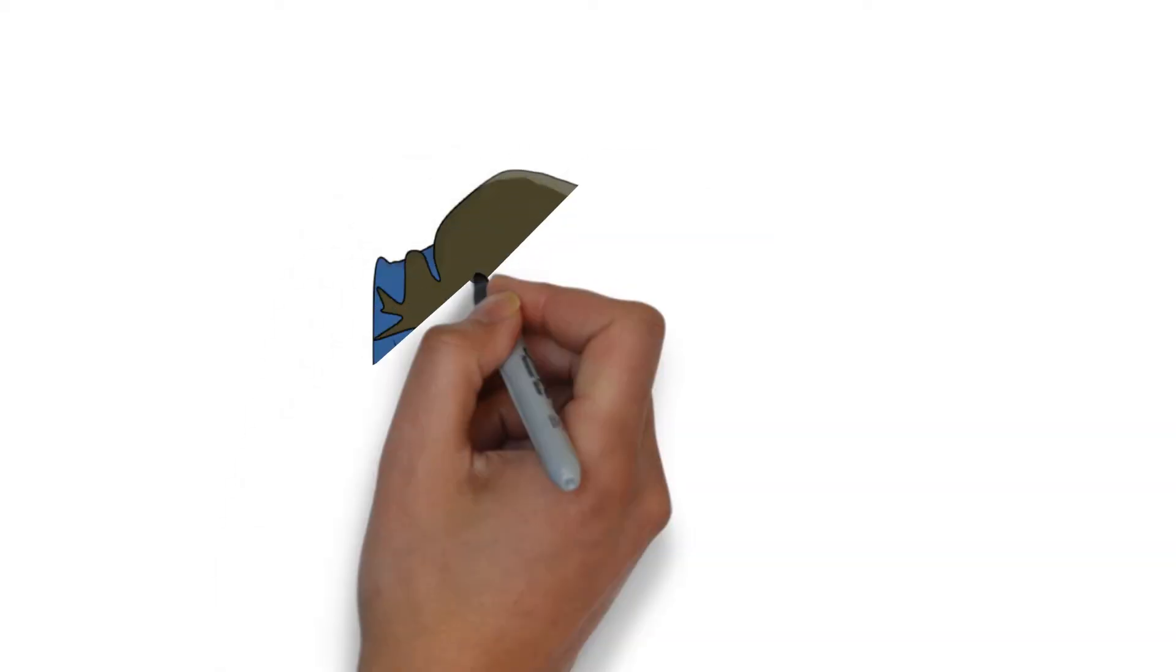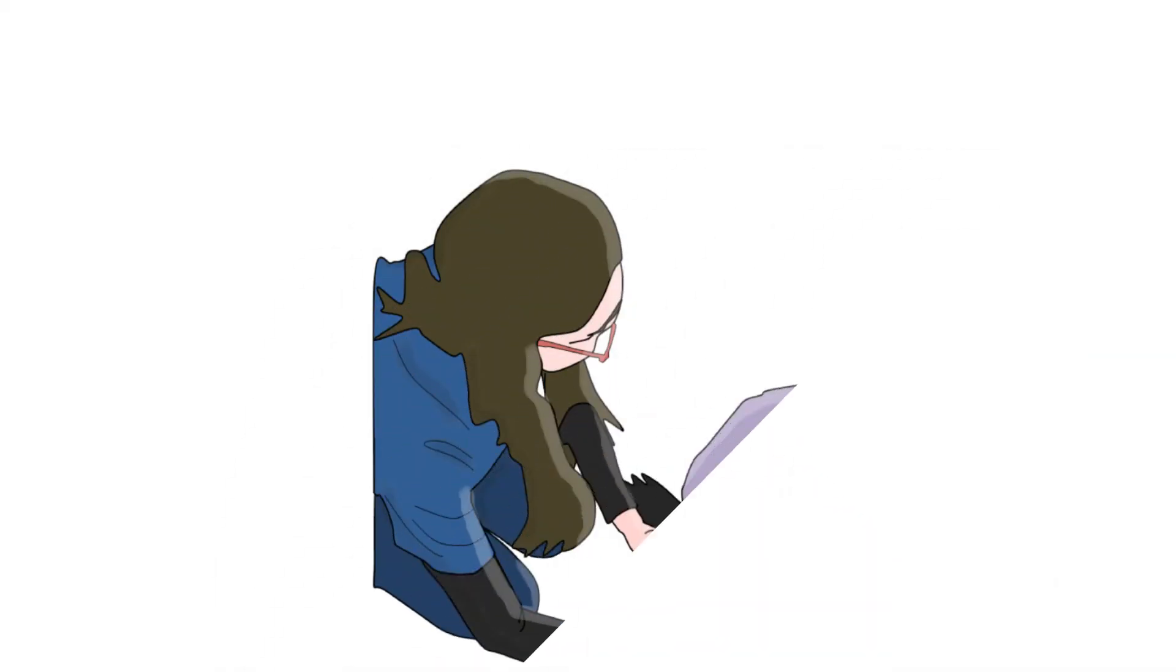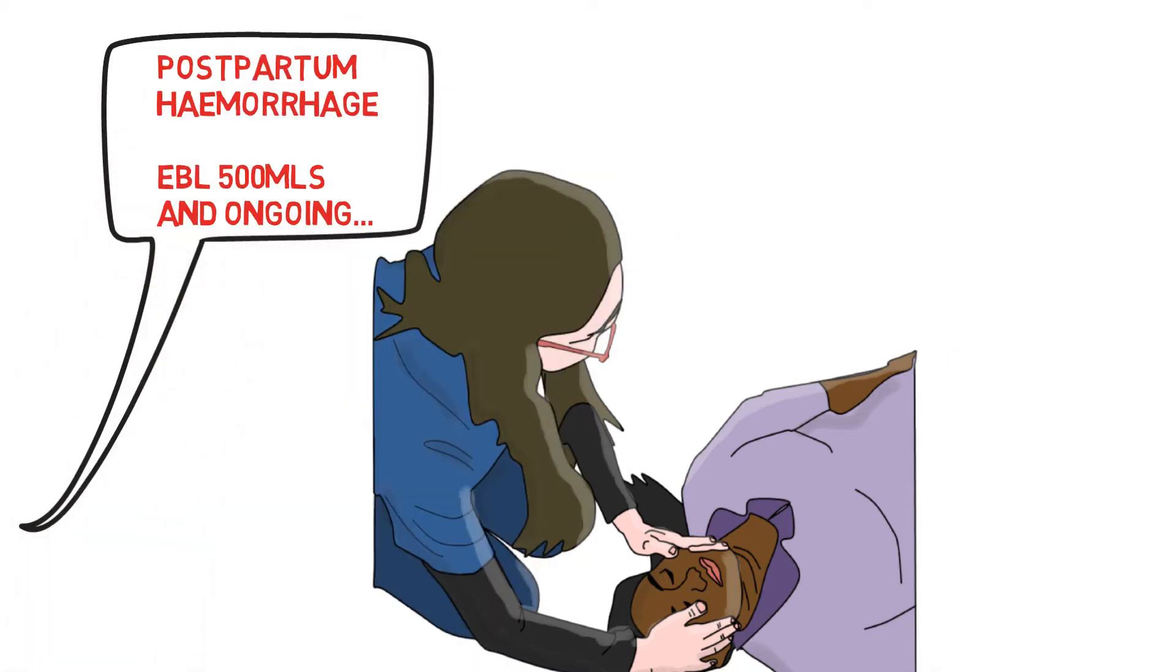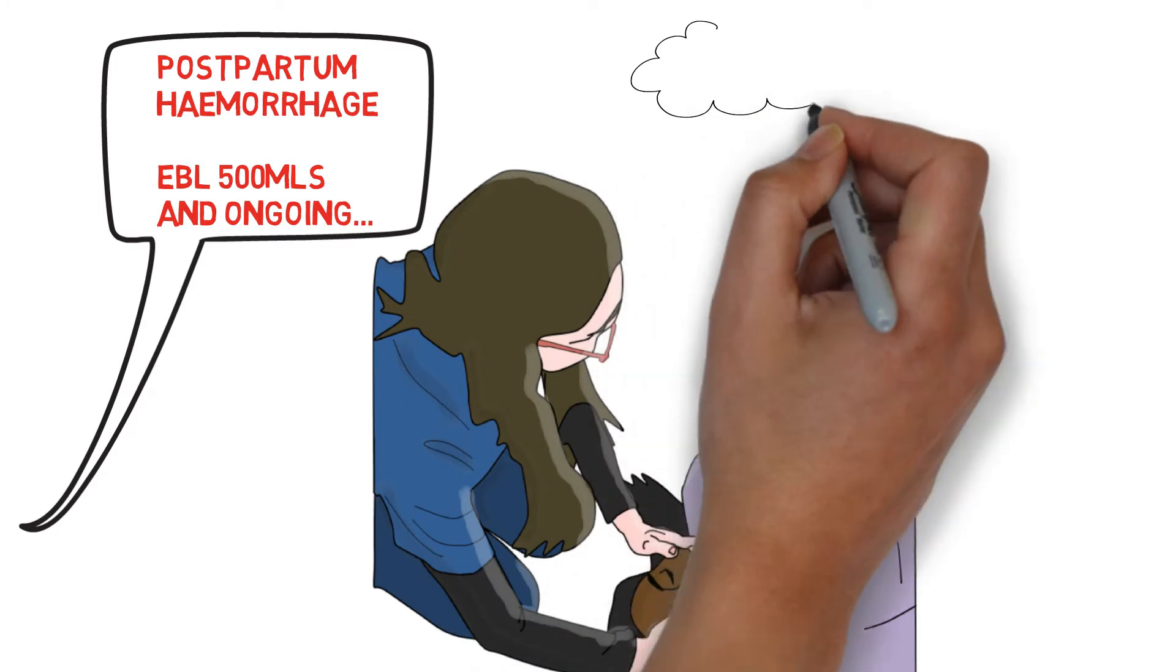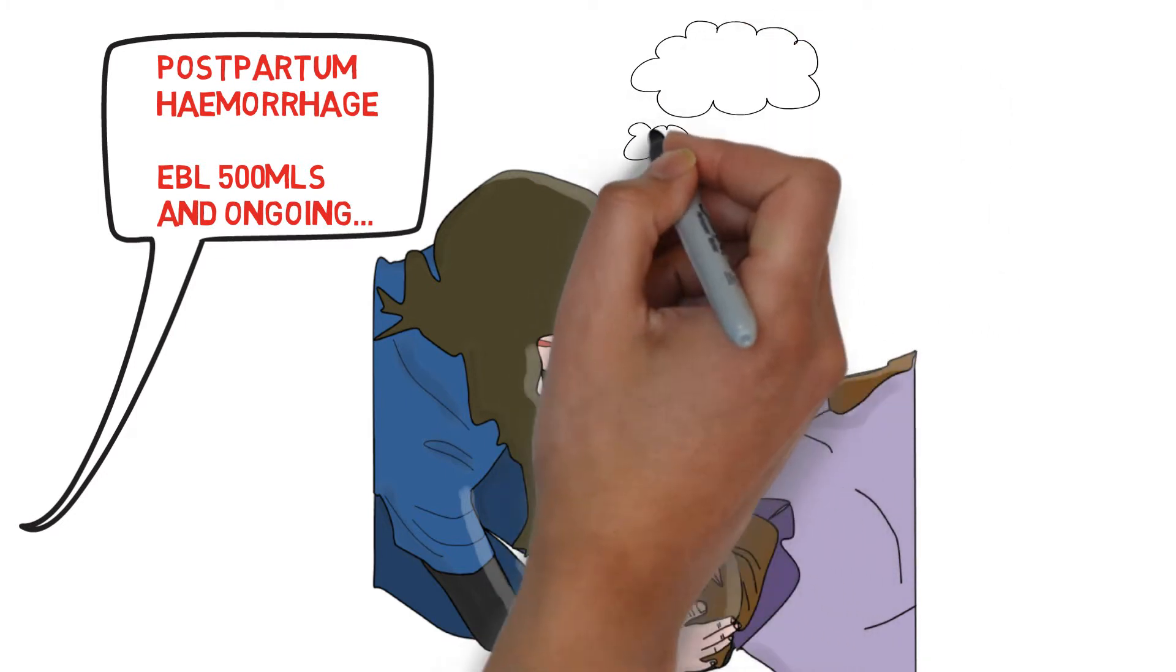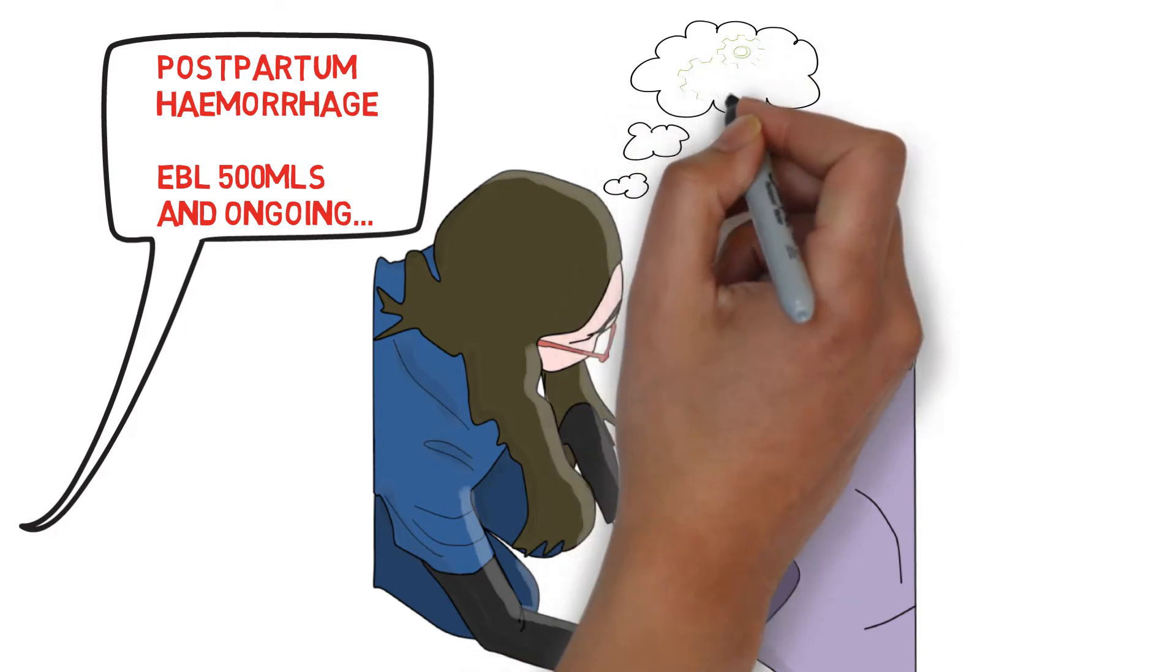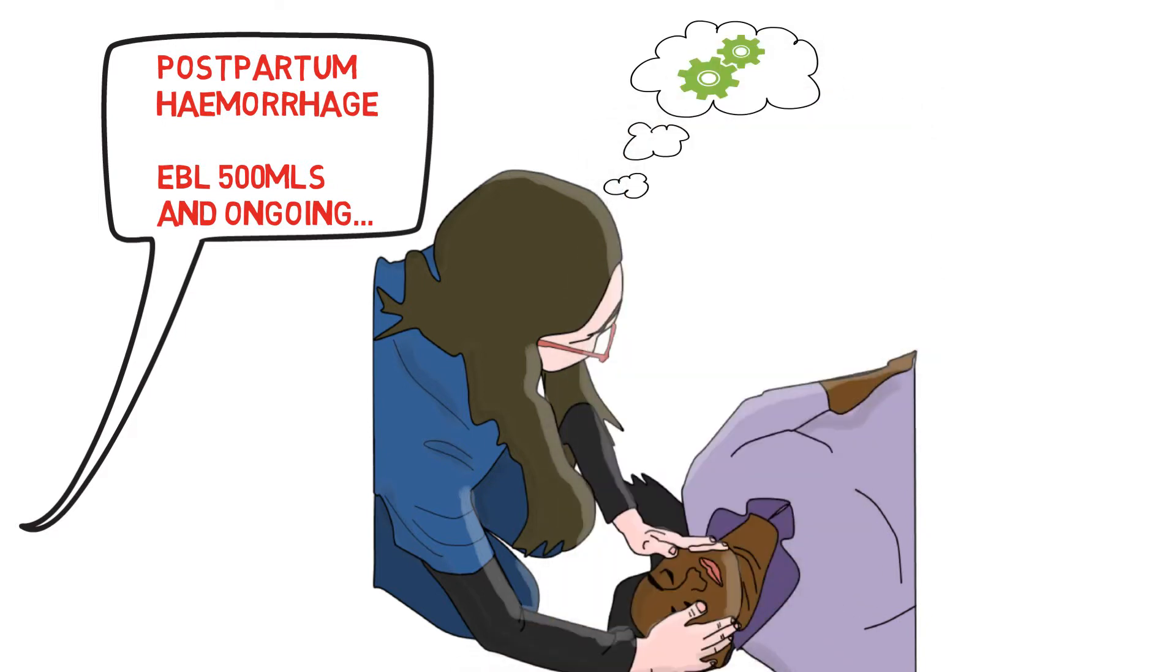Imagine you are called to a postpartum haemorrhage. If you were incorrectly informed that the estimated blood loss was 500 mils and ongoing, when in fact the estimated blood loss was 2000 mils and ongoing, this would activate the wrong mental model. As the series of typical actions and your projection of the future in response to each situation differ significantly.